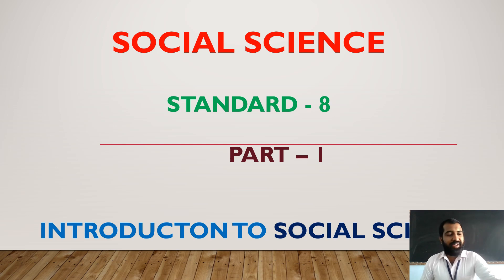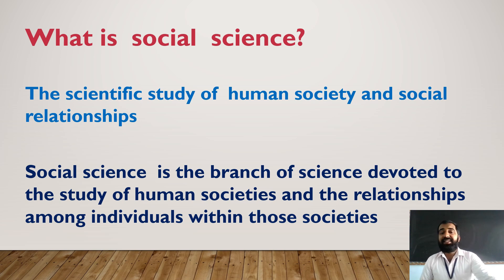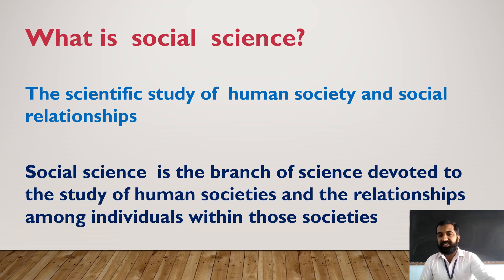Before going to the chapter, I am going to explain what we are studying in Social Science and what is the importance of studying Social Science in our life. Social Science is a scientific study of human society and social relations — the systematic study of human society and social relationships. It is the branch of science devoted to the study of human societies and the relationships among individuals within those societies.